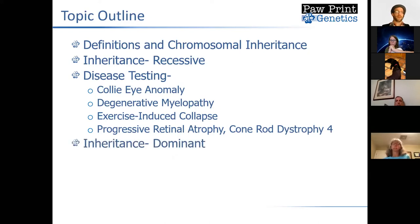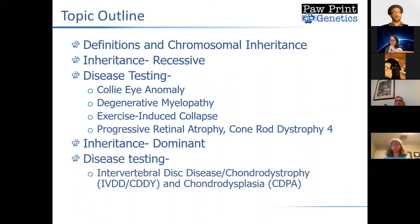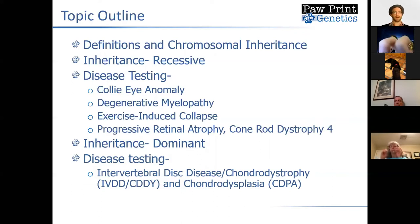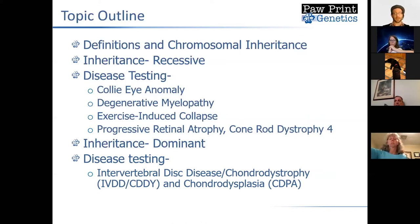We'll briefly discuss dominant inheritance as well, and then move on to a discussion about chondrodystrophy and intervertebral disc disease, where the risk factor is inherited in a dominant fashion. That means you only need one copy of that mutation in order to show an increased risk of that condition.